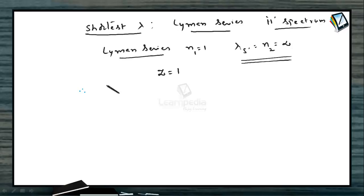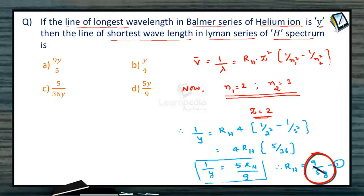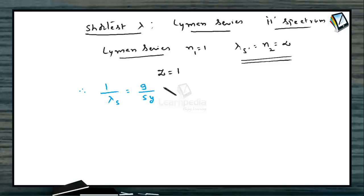Therefore, 1 by lambda S, that is shortest wavelength we are represented by lambda S, is equal to RH. RH we got it as 9 by 5. Let us substitute that 9 by 5Y into 1 by 1 square minus 1 by infinity square. Therefore, 1 by lambda S comes out to be 9 by 5Y. And what is this? 1 by 1 square? 1. This is 0.